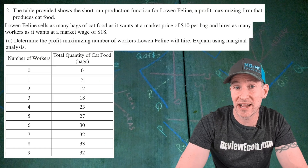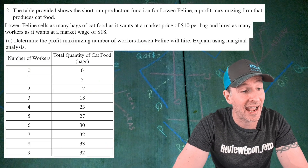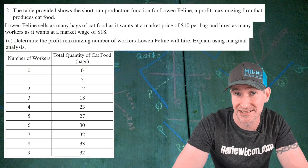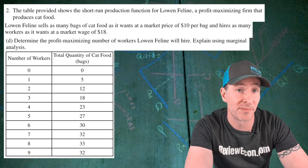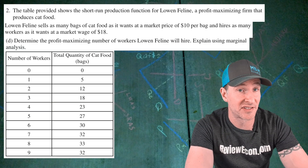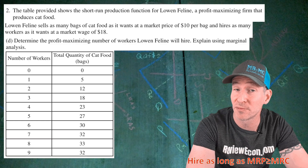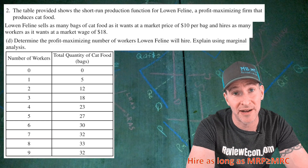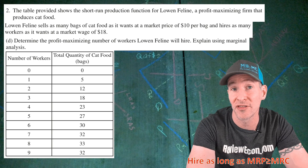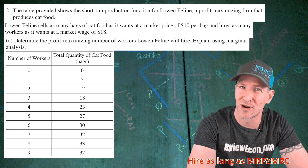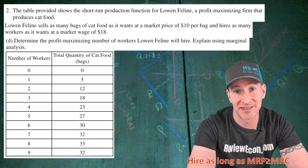In order to get this point, you have to state what the marginal product is for both the second and third worker, showing that it is the first time marginal product decreases. For part D, we have to identify the profit-maximizing number of workers Low-End Feline should hire and explain using marginal analysis. Remember, marginal analysis means comparing marginal costs and marginal benefits. This firm will hire as long as the marginal benefit — the marginal revenue product — is greater than or equal to the marginal cost of hiring, which is the marginal resource cost or marginal factor cost. The best place to be is where they're equal.